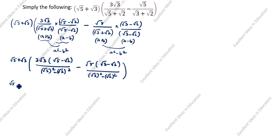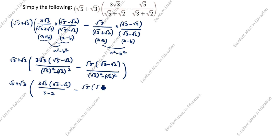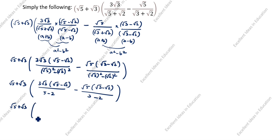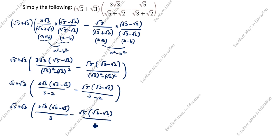Next step: root 5 squared is 5 and root 2 squared is 2, so the first denominator becomes 5 minus 2 which is 3. For the second term, root 3 squared is 3 and root 2 squared is 2, so the denominator becomes 3 minus 2 which is 1. We have root 5 plus root 3, open the bracket, with root 3 minus root 2 divided by 1.